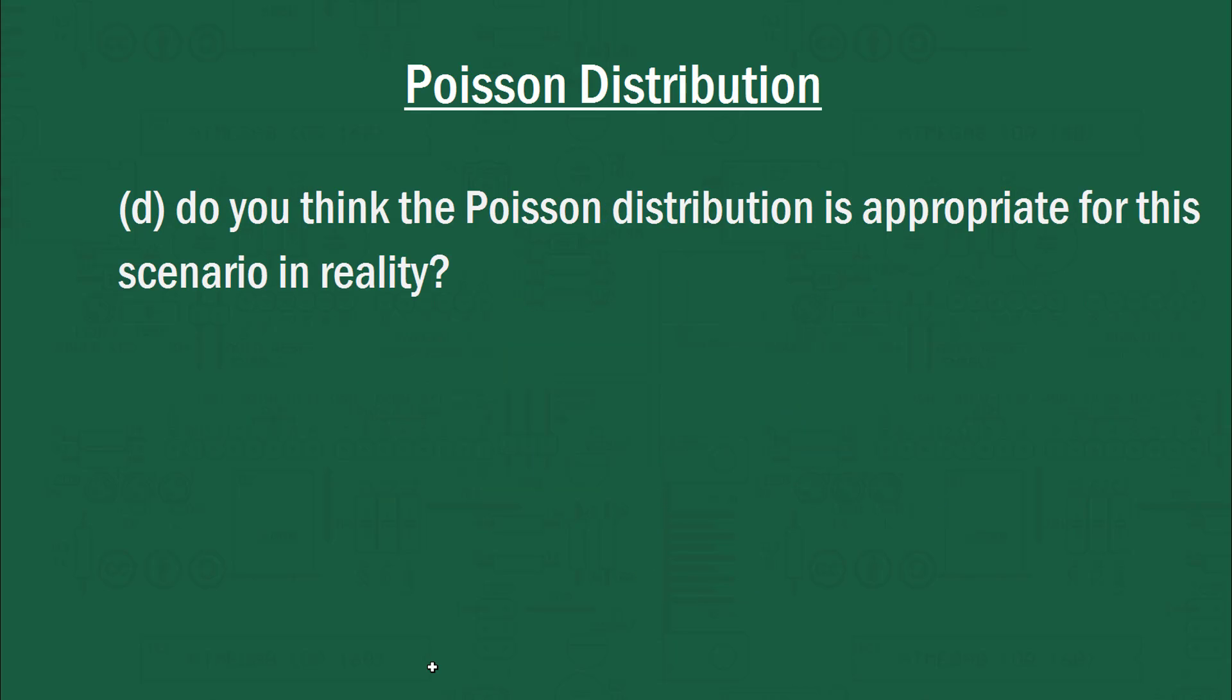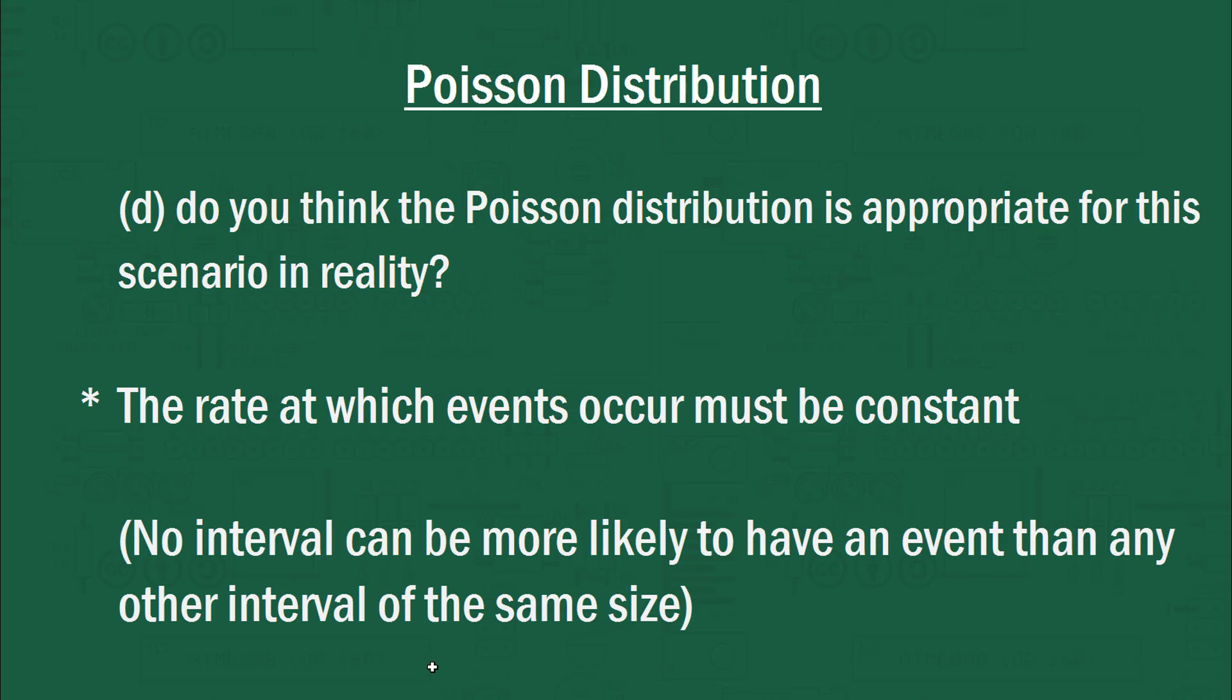Question D, the bonus question, asks you to think about what a Poisson distribution kind of is, and whether it's appropriate for this scenario in reality. Now, I'll return you to our assumption where it said that the rate at which events occur must be constant. So in other words, no interval can be more likely to have an event than any other interval of the same size.